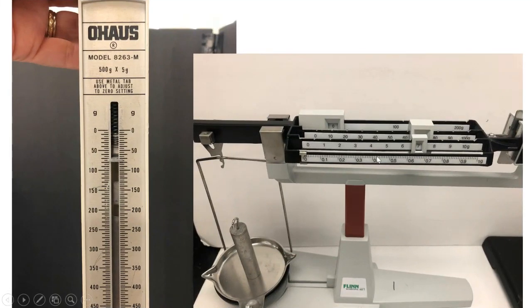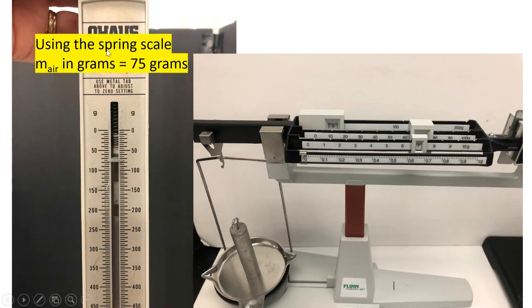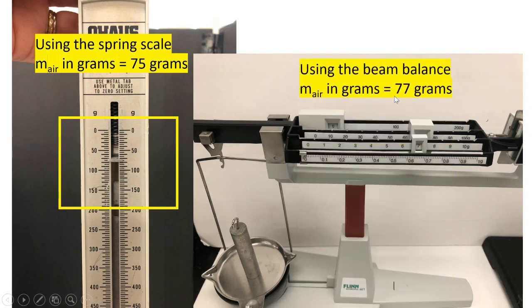To compare both readings, we have here the spring scale marking 75 grams and the beam balance marking 77 grams. So it's pretty close because we need to use this value right here, but we are using the beam balance just to compare.